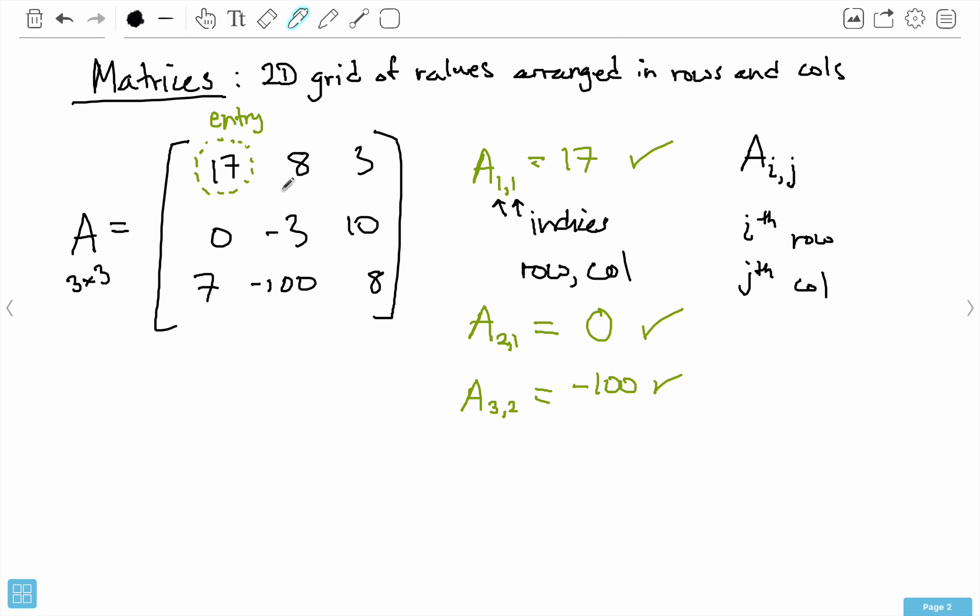One thing to note is that because A is a 3x3 matrix, there's no fourth row or fifth row or fourth column or seventh column. You have to make sure that you keep these i and j indices within the bounds of the matrix.